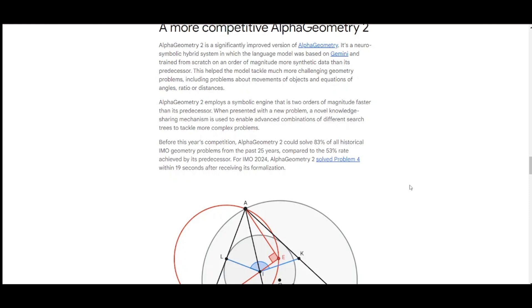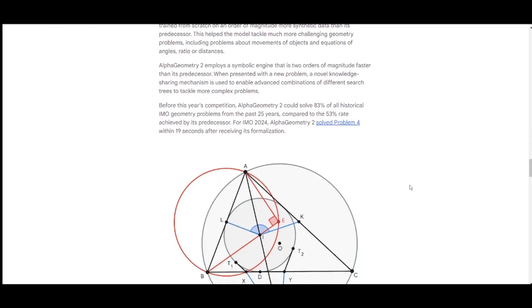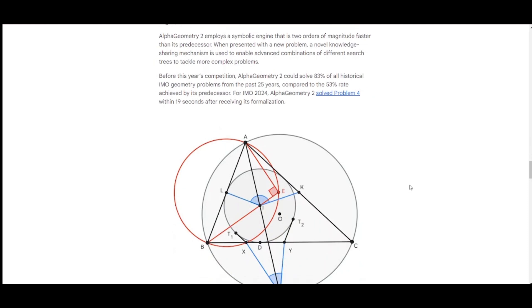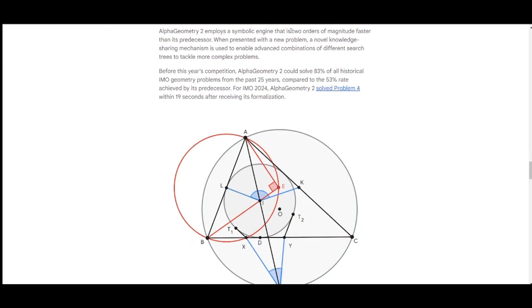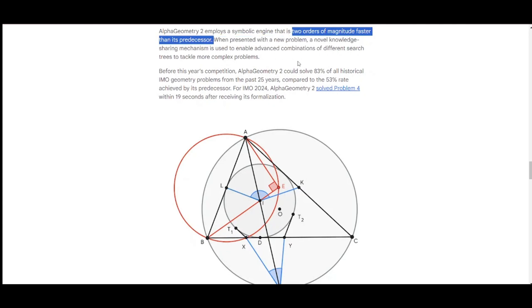When presented with a new problem, a novel knowledge sharing mechanism is used to enable advanced combinations of different search trees to tackle more complex problems. Before this year's competition, AlphaGeometry 2 could solve 83% of all historical IMO problems from the past 25 years, compared to the 53% rate achieved by its predecessor.